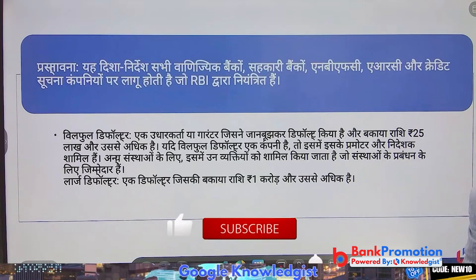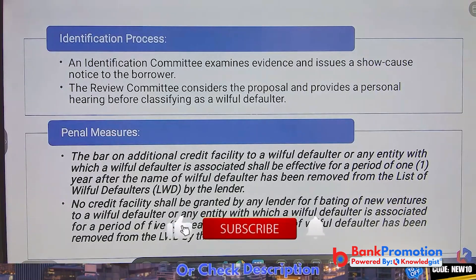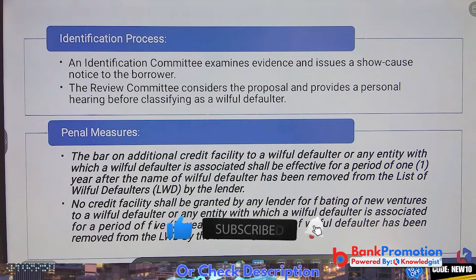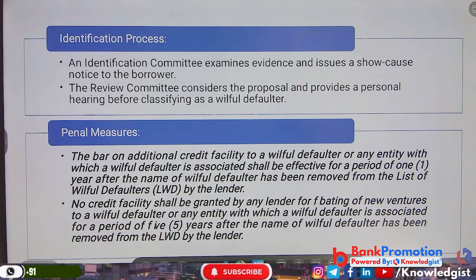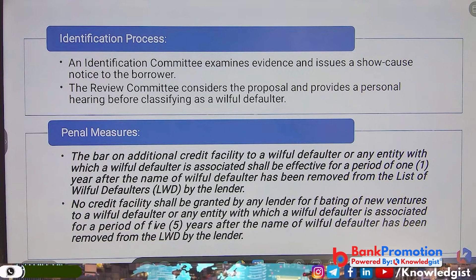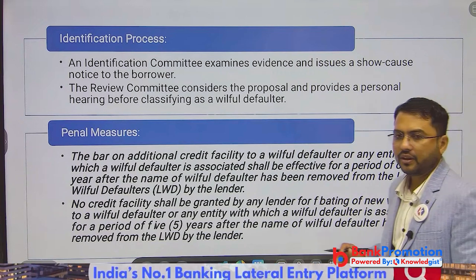These things are important and will come in the exam. How to identify a willful defaulter: an identification committee examines evidence and issues a show cause notice; the review committee then considers the proposal and provides a personal hearing before classifying someone as a willful defaulter.